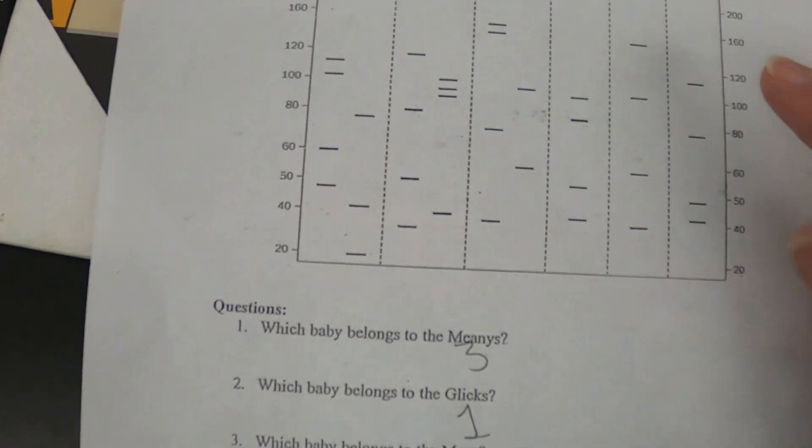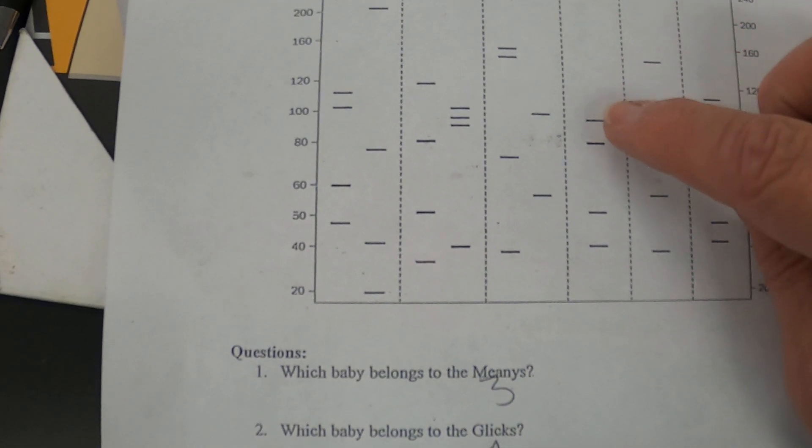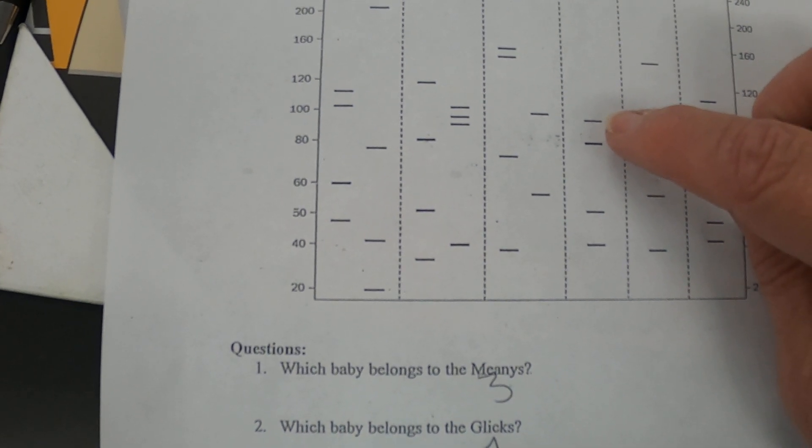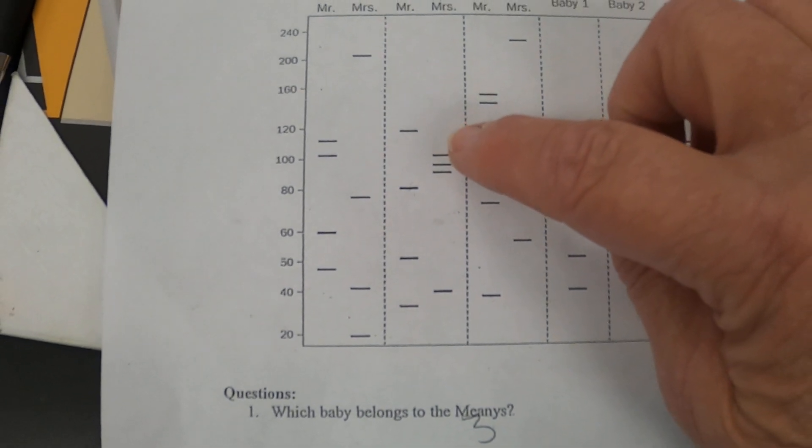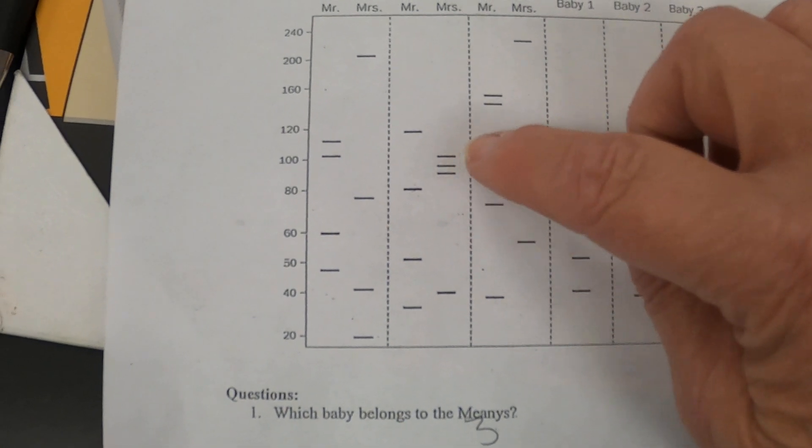Okay so what we do is we look here at baby one and we look at these lines. These are where the bases have combined with their complementary bases and have left us a message in the form of a mark. And we look here and this goes with the marks here on the glicks, this goes with the marks also here on the glicks.